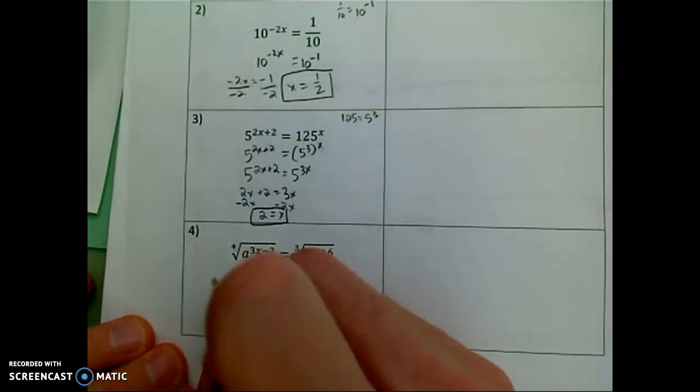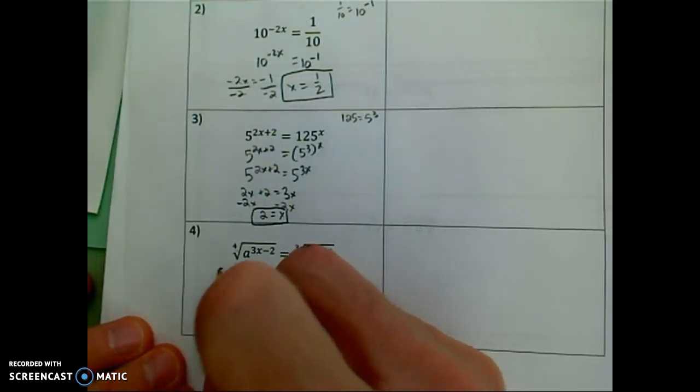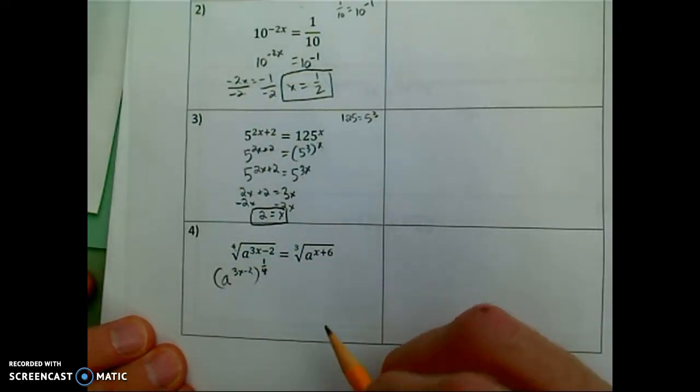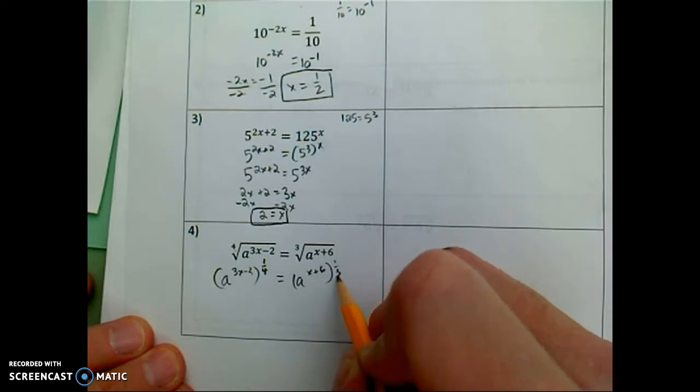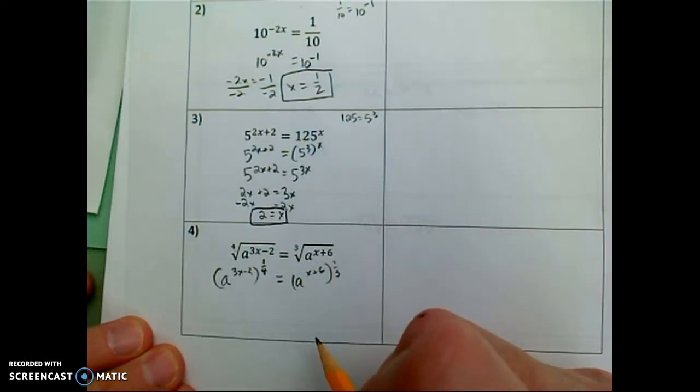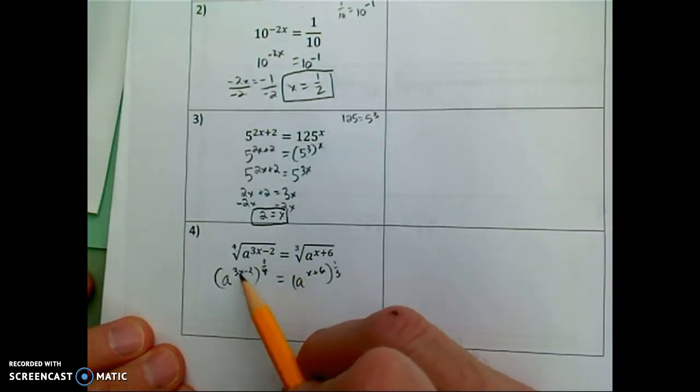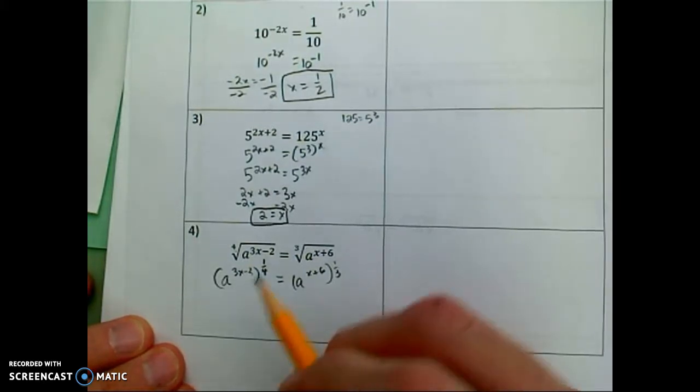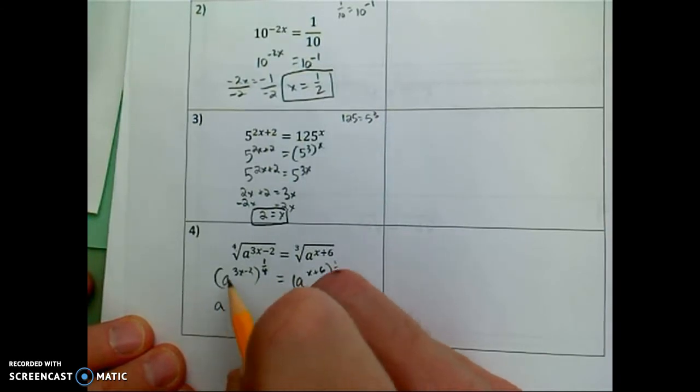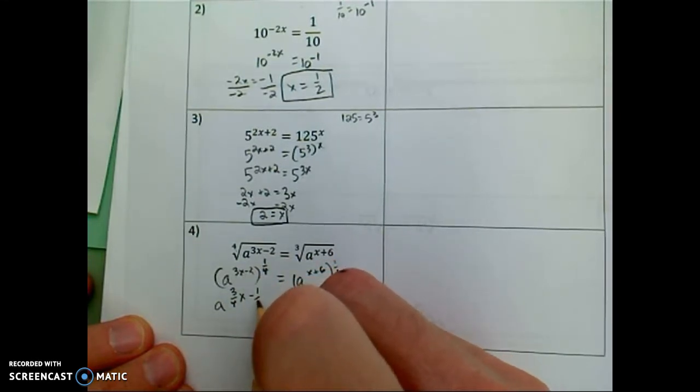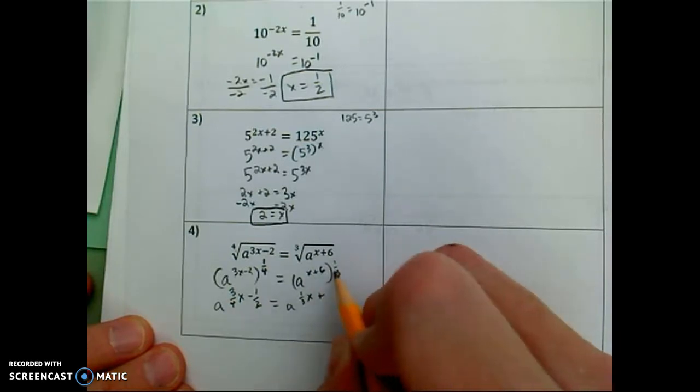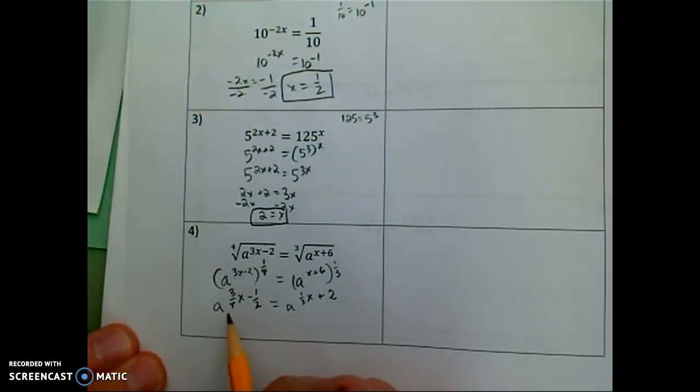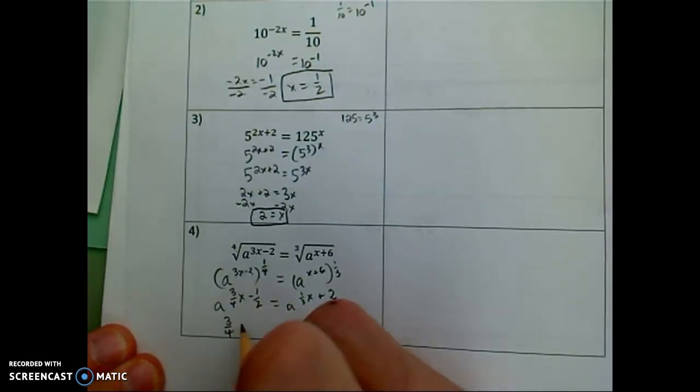So a fourth root can be expressed as an exponent of one-fourth. A cube root can be expressed as an exponent of one-third. So I can take the radicand a to the x plus six power and raise that to the one-third. Similarly here, a to the 3x minus 2 raised to the one-fourth. Great. What happens then? Well, power to power, I multiply the exponents. 3x times one-fourth, that's three-fourths x. Two times one-fourth, that's one-half. Here, a to the one-third x plus one-third of six is two. Okay, so now a to the something equals a to the something, I can set the exponents equal to one another.